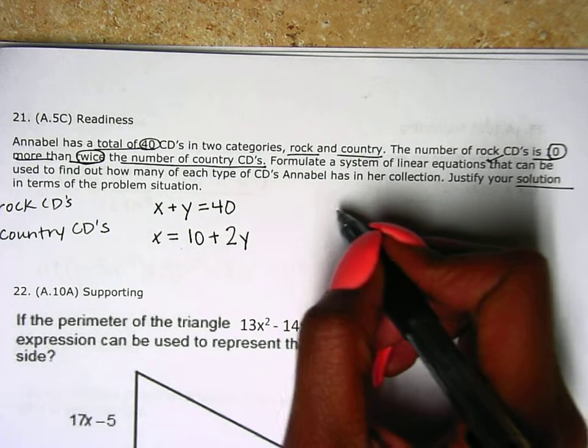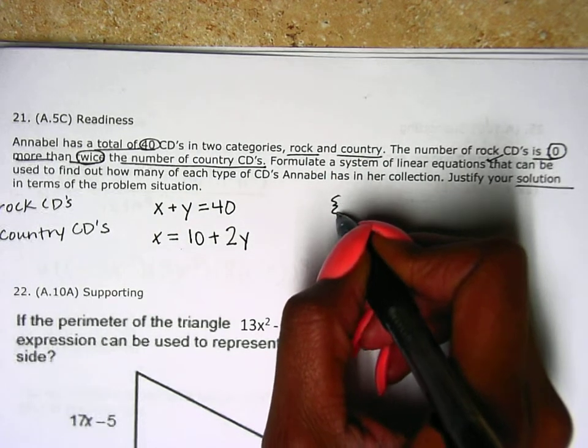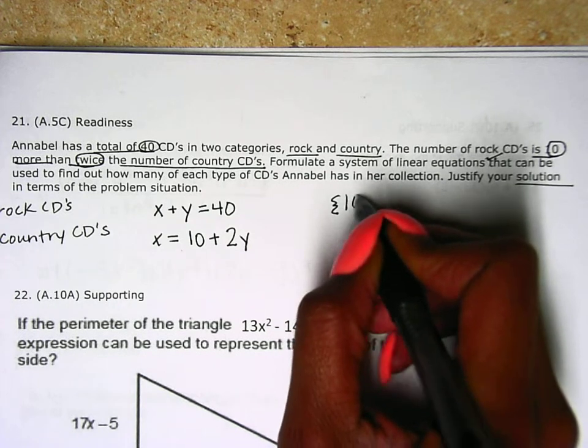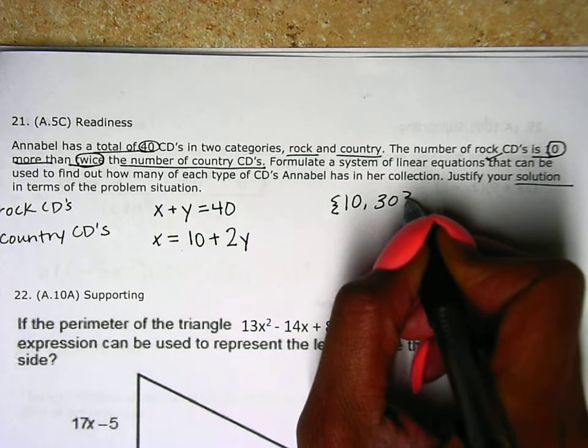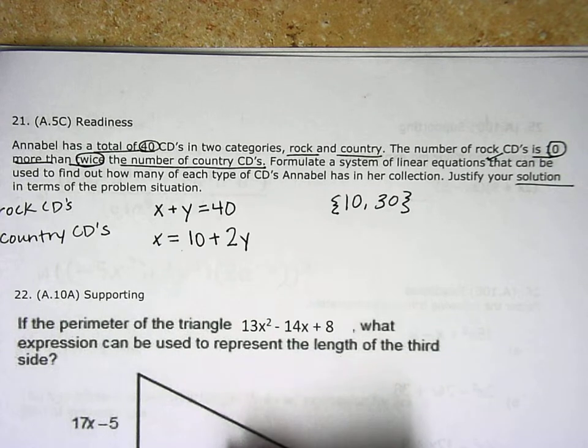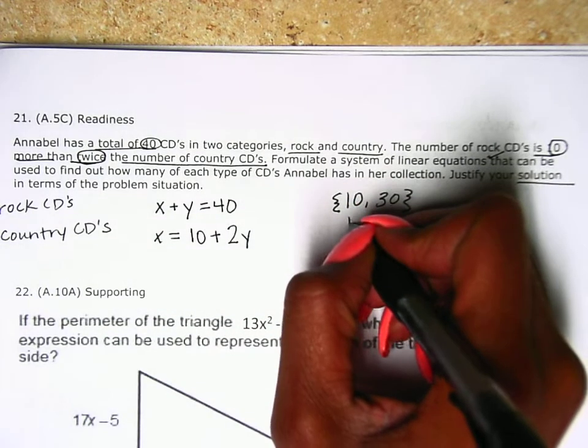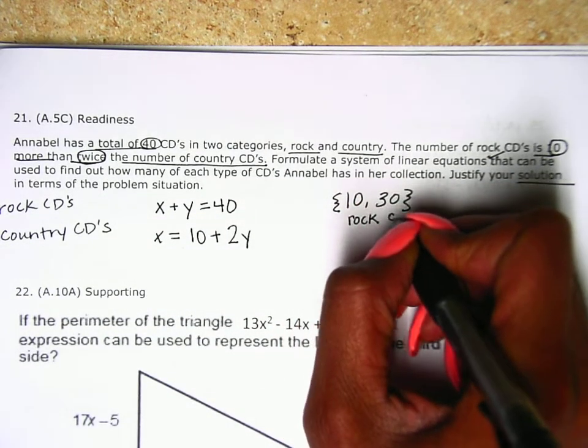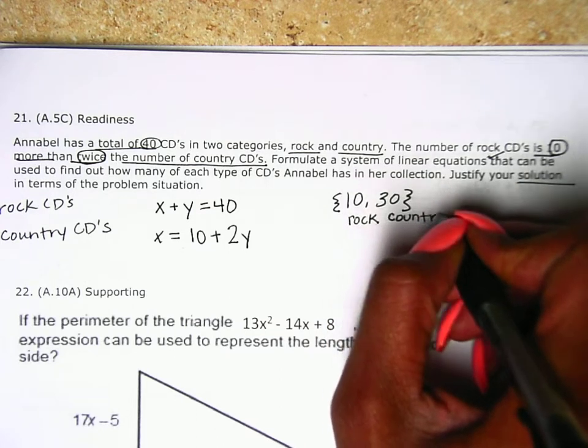After you figure out your solution, which should be 10 rock CDs and 30 country CDs, you can justify by saying that.